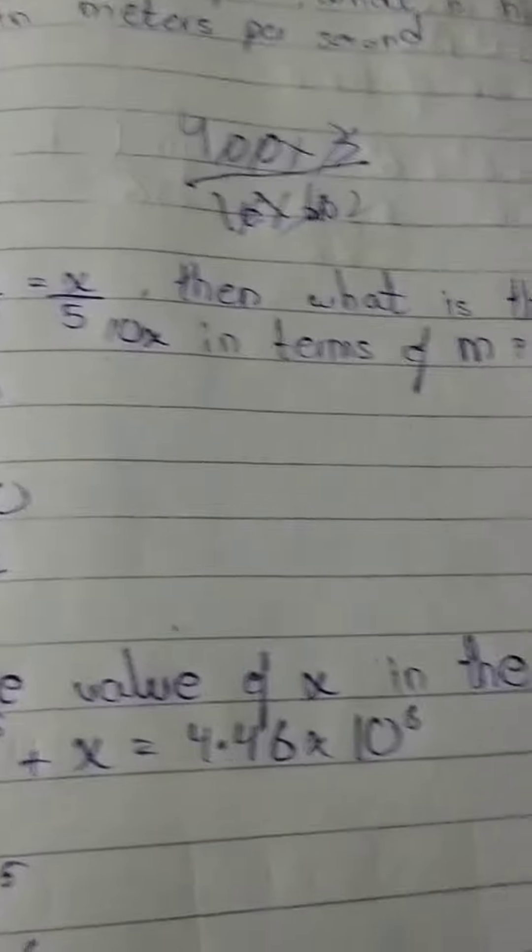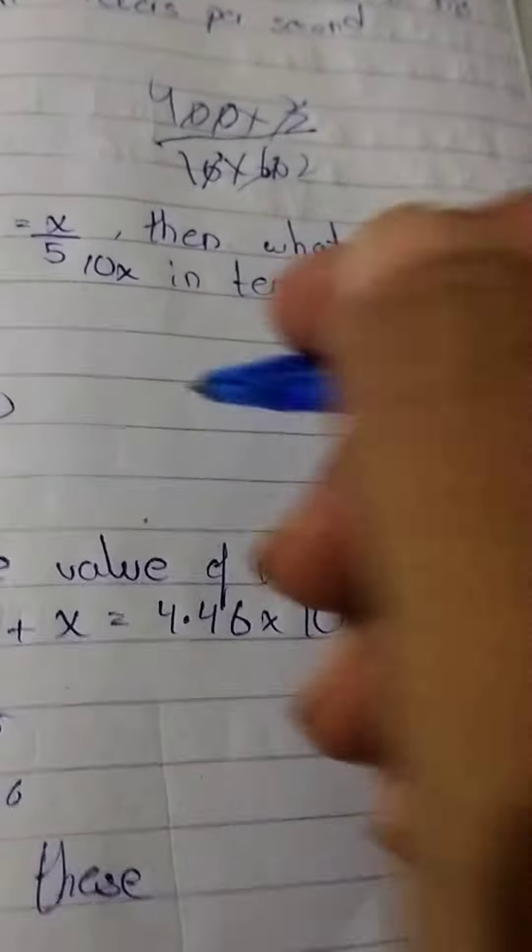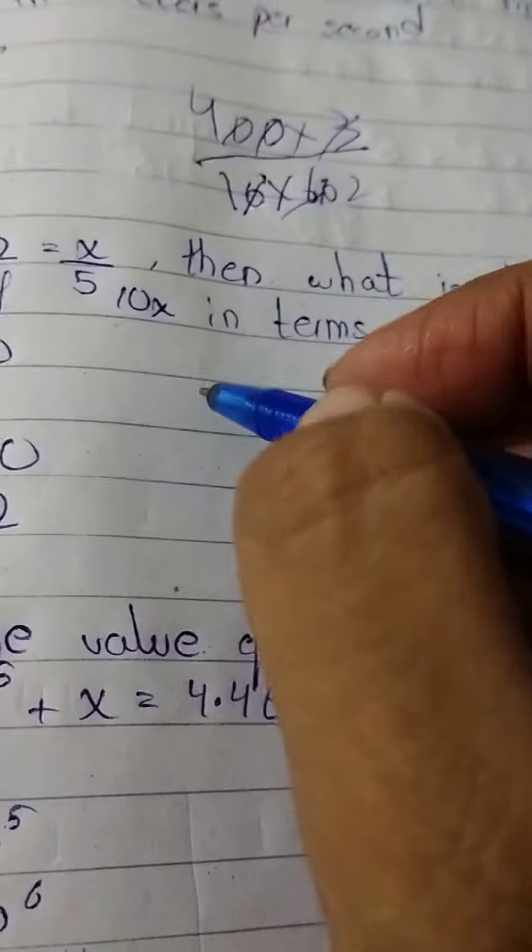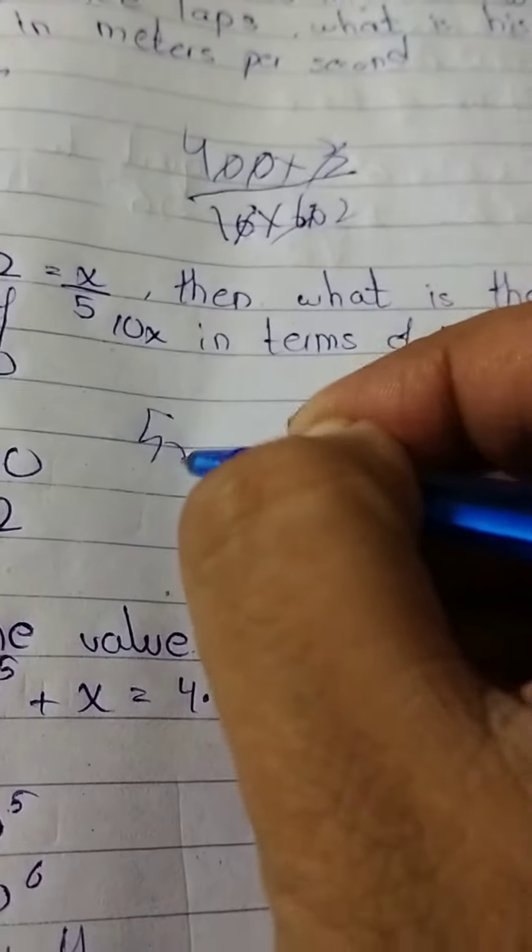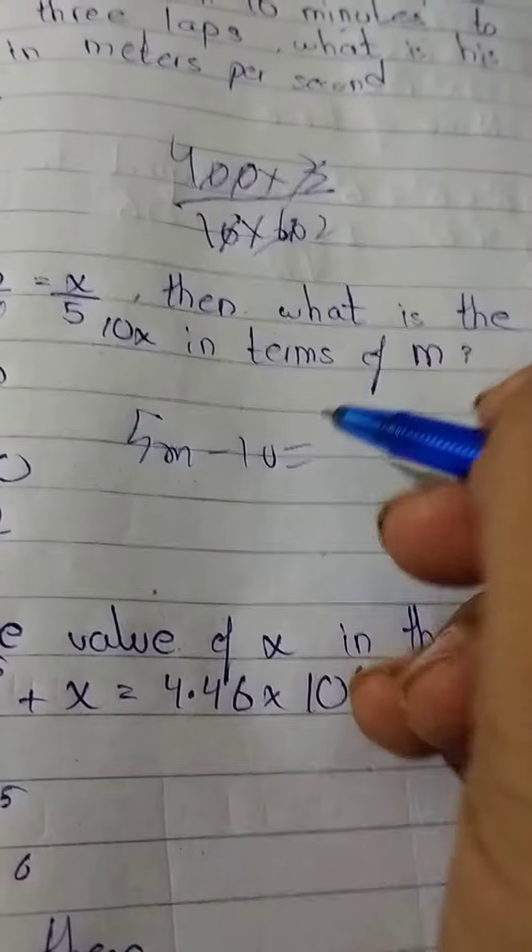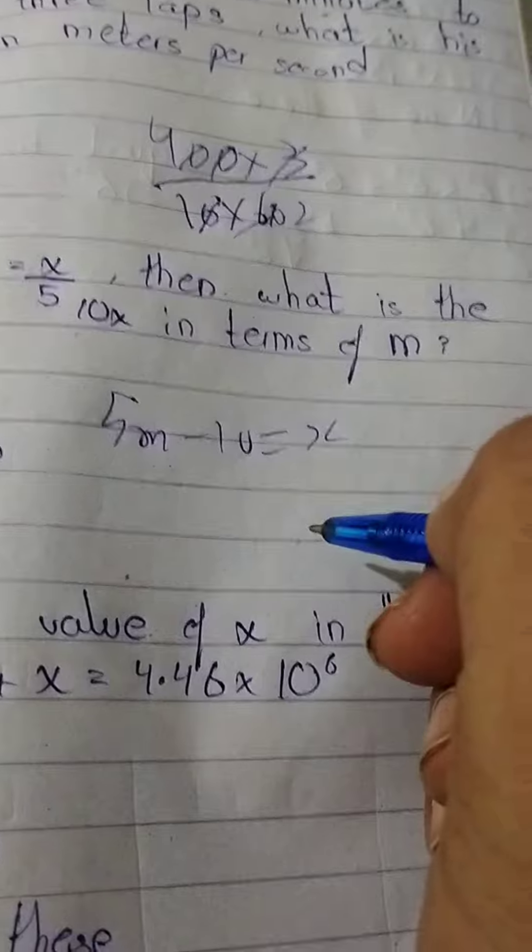If m minus 2 is equal to x upon 5, then what is the value of 10x in terms of m? First of all, cross multiply: 5m minus 10 equal to x.